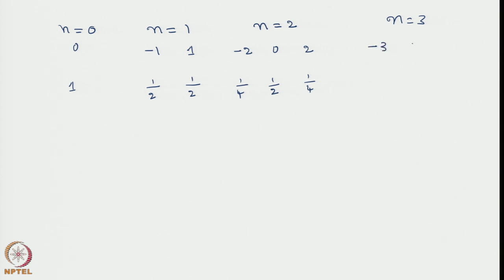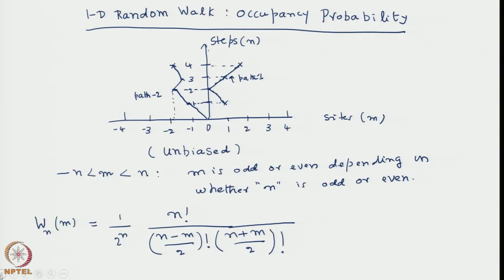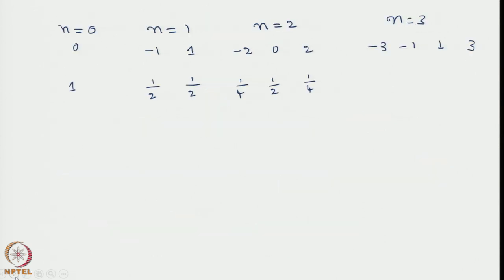Going back to the expression for n equal to 3: 3 factorial divided by [(3 minus m)/2] and [(3 plus m)/2]. We put m equal to 1 and we get 3/8. By symmetry, minus 1 also gives 3/8. We are then left with 1/8 at m equal to plus 3 and 1/8 at m equal to minus 3. The total adds to 1, as probabilities must always sum to unity.